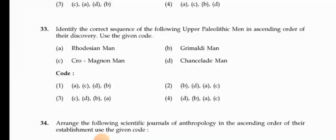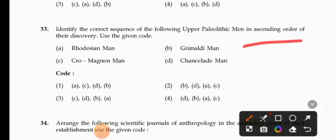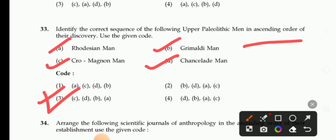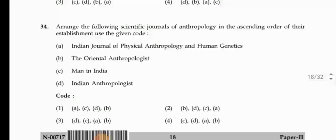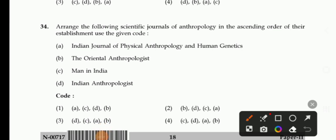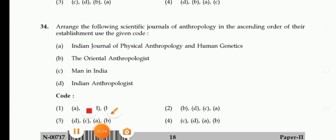Next question: Identify the correct sequence of the following upper Paleolithic men in ascending order of their discovery — Rotation men, Grimaldi, Cro-Magnon men, Chancelate. The right answer is 3.